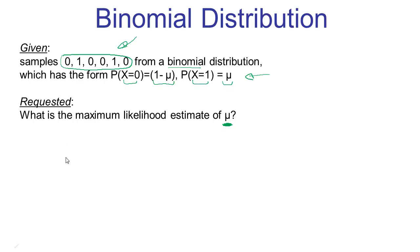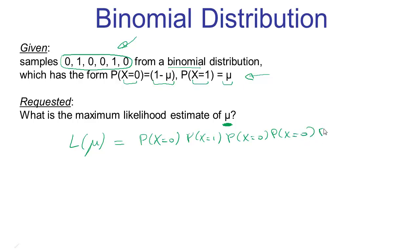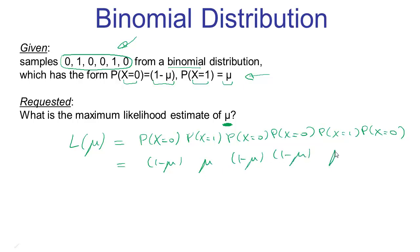The first step is to write out the expression for the likelihood. The likelihood is a function of the free parameter mu and equals the product of the probabilities of each data point. So it is the probability of seeing 0 times 1 times 0 times 0 times 1 times 0, parameterized by mu. This gives us 1 minus mu times mu times 1 minus mu times 1 minus mu times mu times 1 minus mu, which simplifies to (1 minus mu) to the power 4 — wait, to the power 3 — times mu squared.